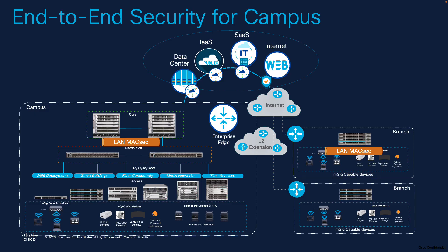Another requirement is establishing a secure connectivity or secure channel from your campus or branch towards applications hosted on cloud or any network segment reachable via the internet or a service provider. That is where IPsec comes in handy, providing the Layer 3 encryption needed to access those applications securely over an encrypted channel.